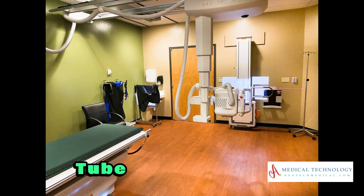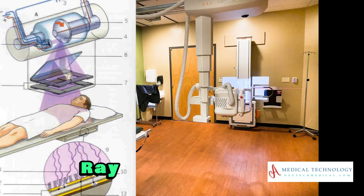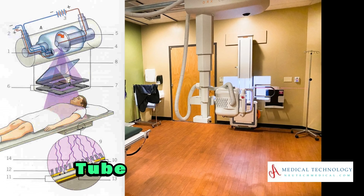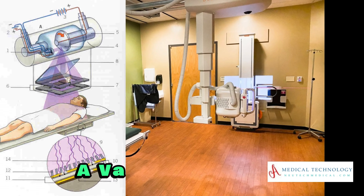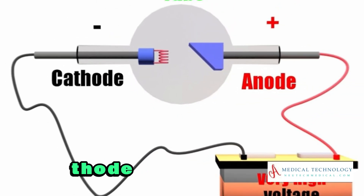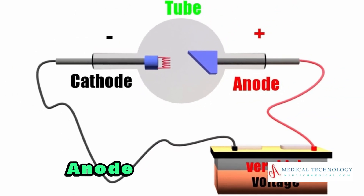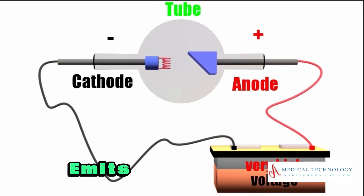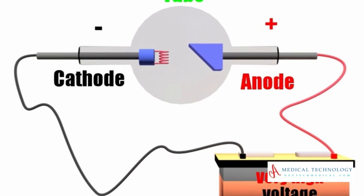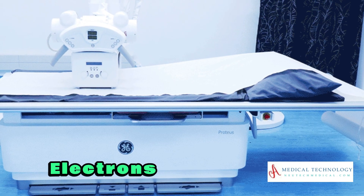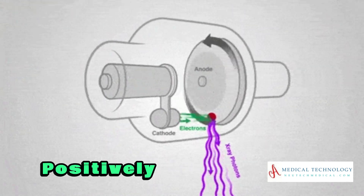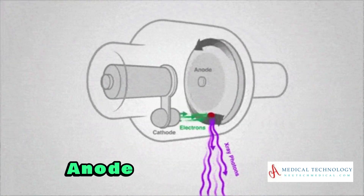X-ray tube. X-ray machines consist of an X-ray tube, which is a vacuum tube that houses a cathode and an anode. The cathode emits electrons when heated, and these electrons are accelerated towards the positively charged anode.